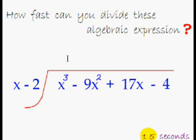You have mastered algebraic multiplication — the time has come to become the king of algebraic division as well. How fast can you divide these algebraic expressions? You have to divide this huge polynomial with this linear binomial, and you have 15 seconds to do that. If you know this cal trick, it will not take you more than 10 seconds. Start!